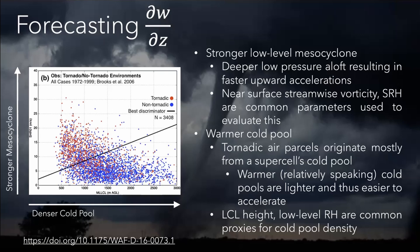The second factor is the cold pool temperature. It turns out that most of the air bound for tornadoes originates from the supercell's cold pool — the rain-cooled air. That's kind of necessary for getting the vorticity and the tornado in the first place. The upshot is that warmer cold pools — in other words, less dense cold pools — are easier to accelerate upwards, and thus you can get larger vertical velocity gradients. There are a couple of things you can use as a first-order proxy for cold pool density. Some popular ones are LCL height and low-level relative humidity averaged over some layer.